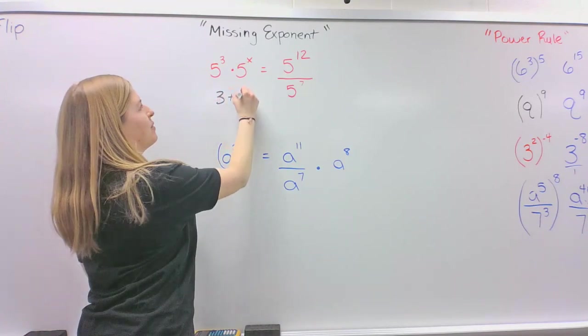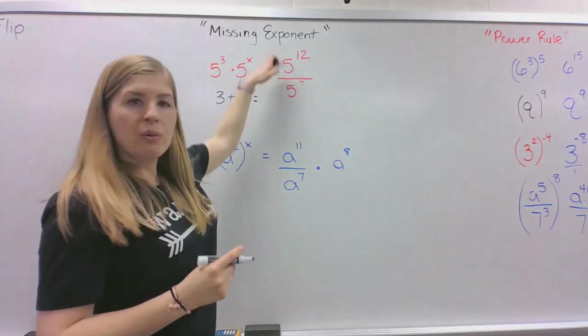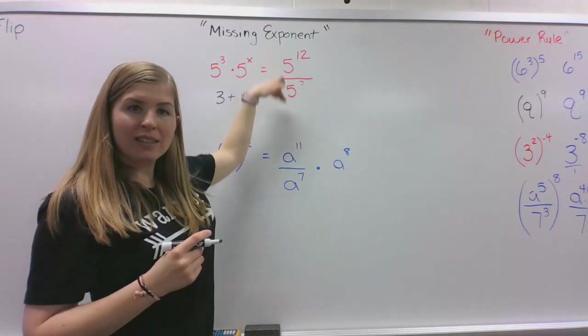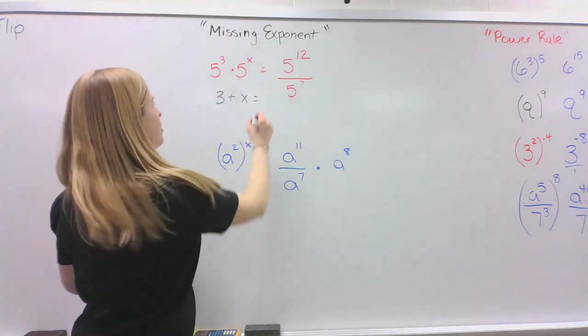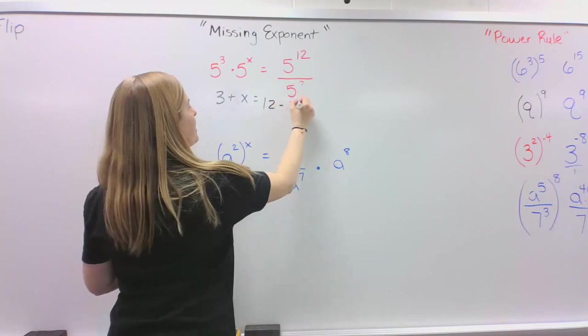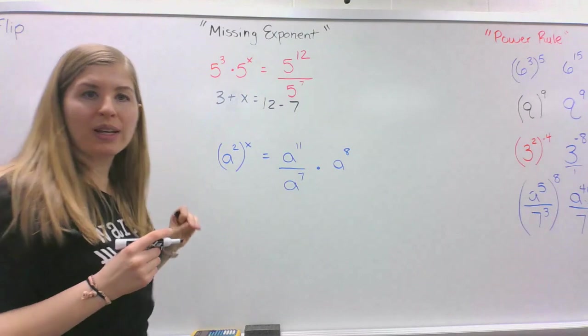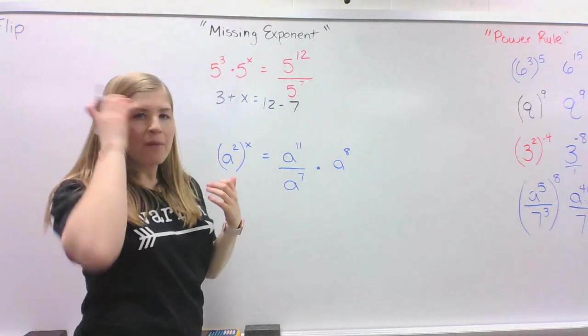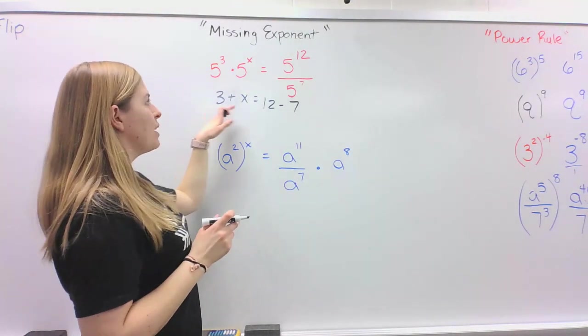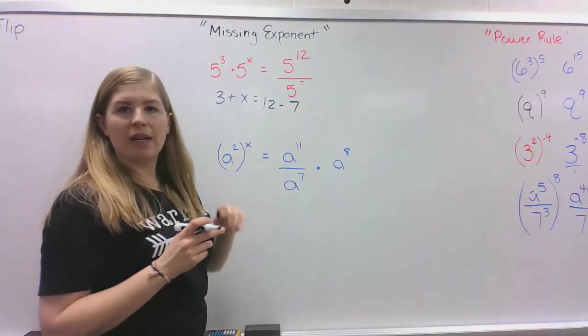And then when we're dividing like bases, we actually subtract the exponents. So it equals 12 minus 7. So this is our new expression, written from taking all those exponents and putting it into an equation. So 3 plus some number equals 12 minus 7.